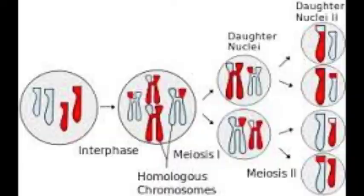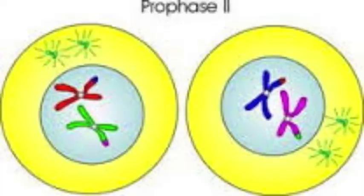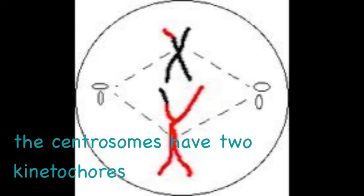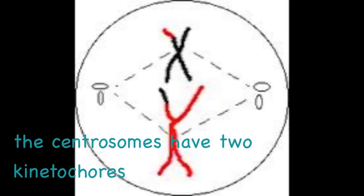And next is meiosis 2. The end result is four haploid cells from two haploid cells. In prophase 2, the nuclear membrane and nuclei disappear and centrioles move towards the poles of the cells as the spindle fibers begin to form. In metaphase 2, the spindle fibers attach themselves to the kinetochore as the chromosomes line up along the metaphase plate.